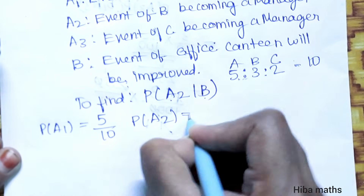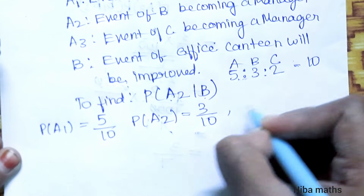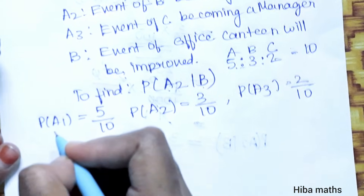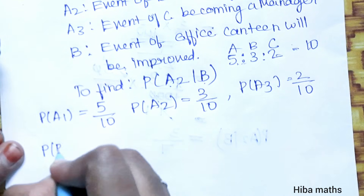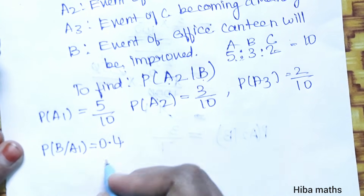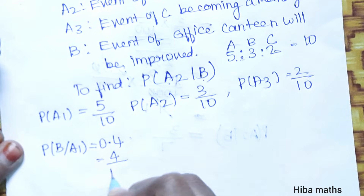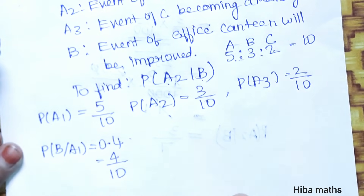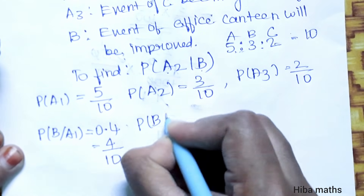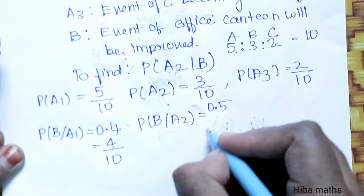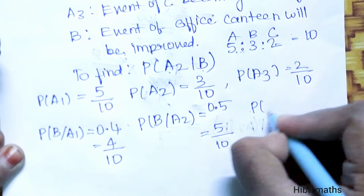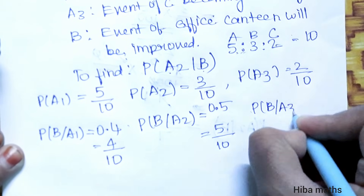P(A2) = 3/10, P(A3) = 2/10. The conditional probabilities: P(B|A1) = 0.4 = 4/10, P(B|A2) = 0.5 = 5/10, and P(B|A3) = 0.3 = 3/10.